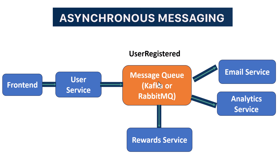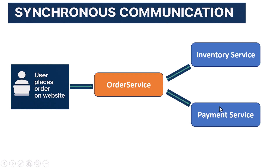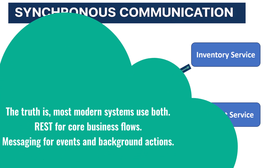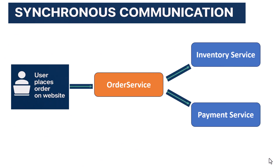So how do you decide between the two? If your service absolutely needs an answer before it can move forward — like a payment response or a validation check — go synchronous. That's where REST APIs shine. But if the service is just publishing something that others might care about, like user signed up or order completed, then messaging is a better fit. The truth is, most modern systems use both: REST for core business flows, messaging for events and background actions. It's not about choosing one over the other — it's about using the right tool for the right job.